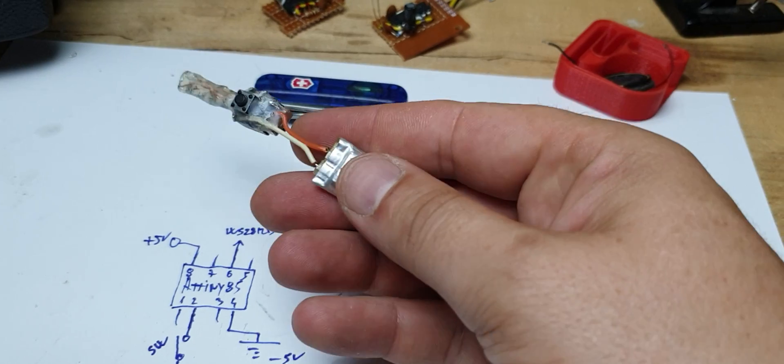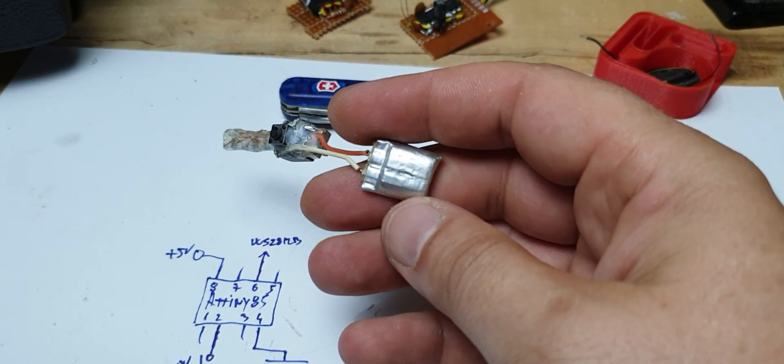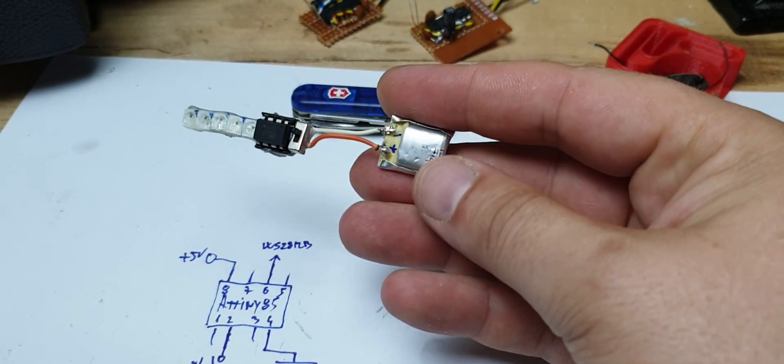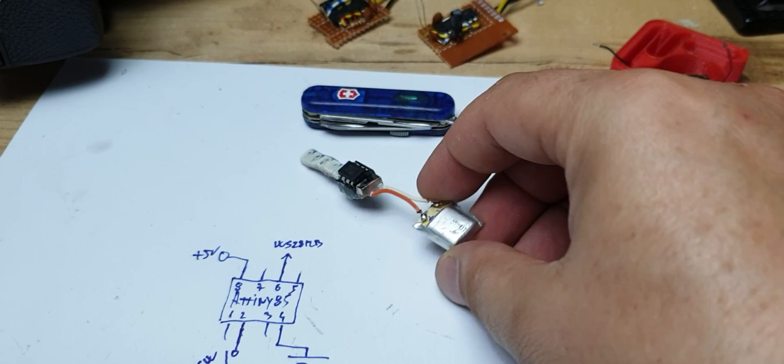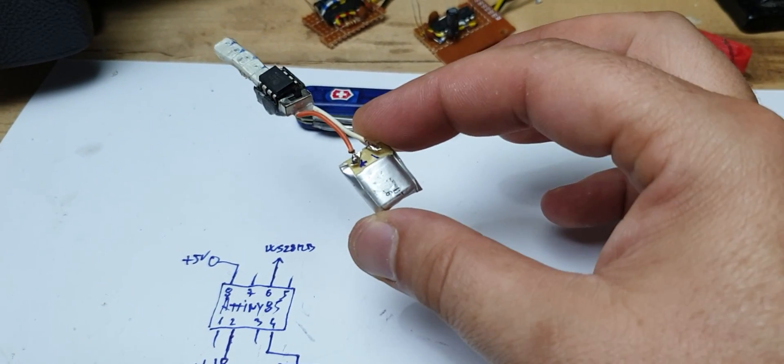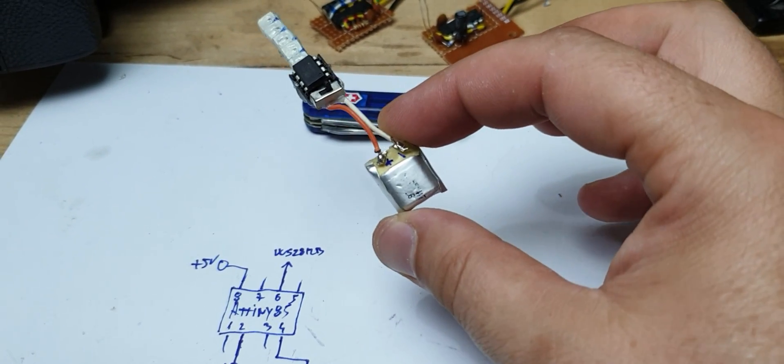First, look at this tiny lithium 3.7V battery. This is the smallest battery that I have ever found.